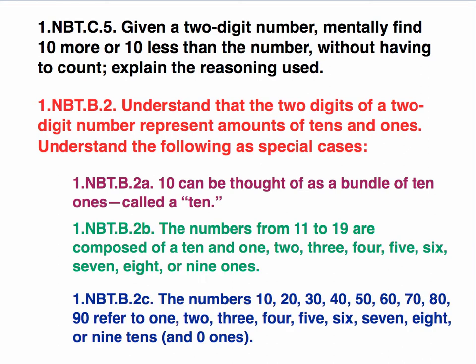And then the third component here, 2C, states the numbers 10, 20, 30, 40, 50, 60, 70, 80, and 90 refer to 1, 2, 3, 4, 5, 6, 7, 8, or 9 tens and 0 ones. So there's a big emphasis here on place value.